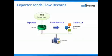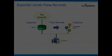InterMapper Flows is called a collector because it receives or collects data from one or several routers or switches. It stores those flow records in a database to produce the displays and views we've already seen. The next steps are to install and configure InterMapper Flows and then your network gear so that it exports the data.